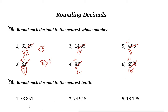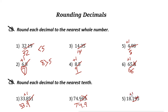Now let's look at rounding to the nearest tens. The tens digit is here, and the digit on the right side is 5 — not less than 5 — so remove it and add 1. 8 plus 1 is 9, giving 33.9. Next: the tens place is 9 and the digit on the right is 4, which is less than 5, so just remove it — the answer is 74.9. Next: the tens place is 1, the digit on the right is 9 — bigger than 5 — so add 1, making it 2. The answer is 18.2.